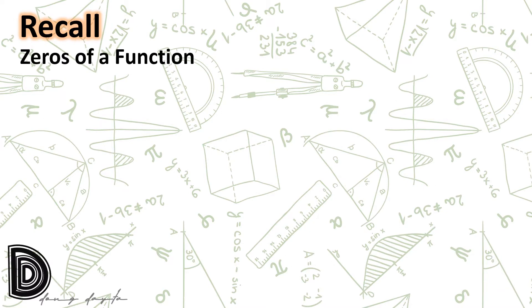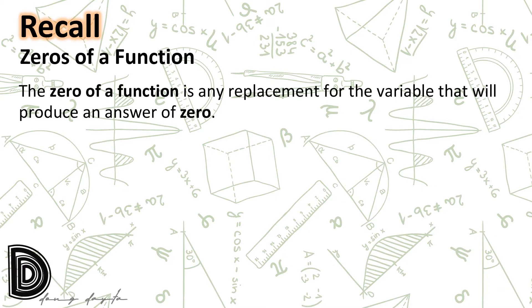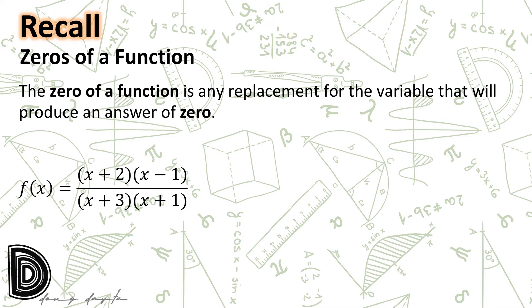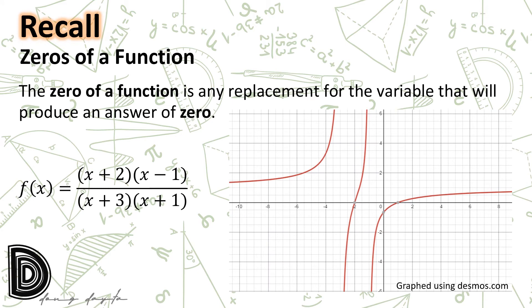The zeros of a function is any replacement for the variable that will produce an answer of zero. For example, for the function f(x) = (x+2)(x-1) / [(x+3)(x+1)], whose graph is shown at the right, the zeros of this function are those points where f(x) is equal to zero.